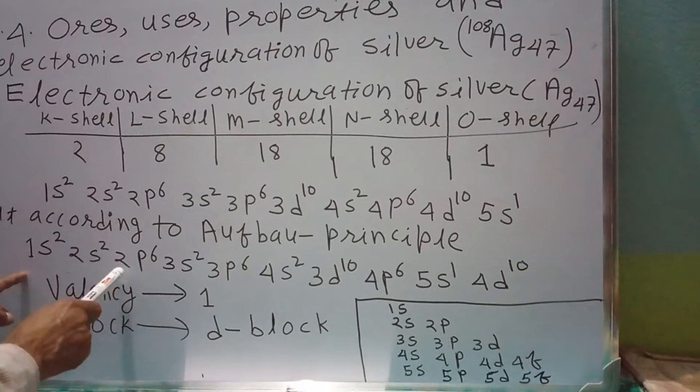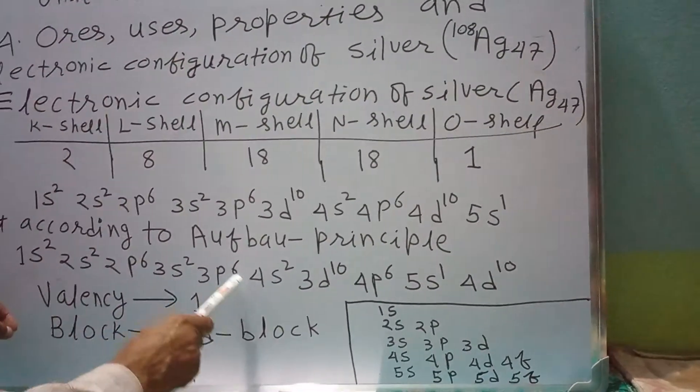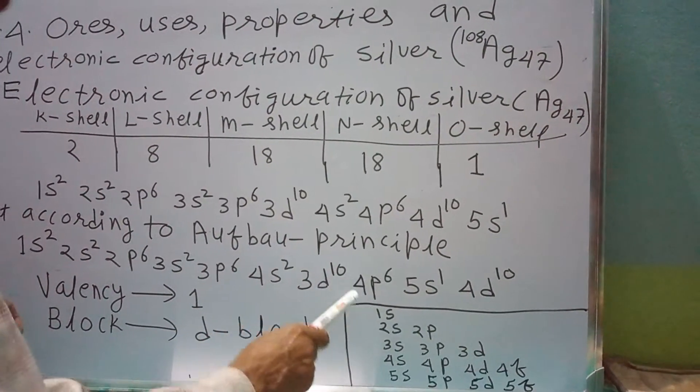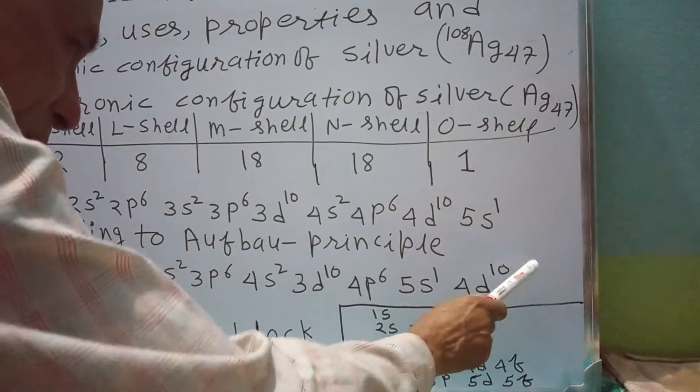But according to Aufbau principle, by using this rule: 1s² 2s² 2p⁶ 3s² 3p⁶ 4s² 3d¹⁰ 4p⁶ 5s¹ 4d¹⁰.